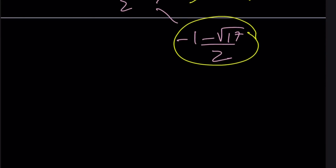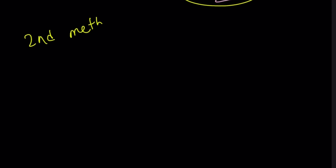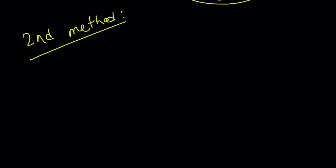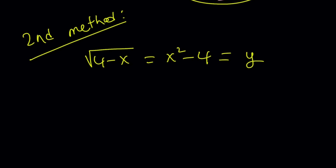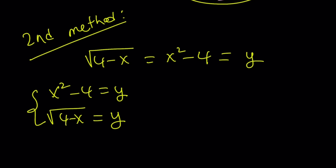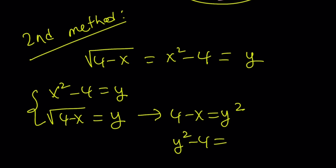Now let's look at the second method. I'm going to rewrite the original radical equation and set both sides equal to y, getting a system of equations. The first equation is x squared minus 4 equals y, and the second is the square root of (4 minus x) equals y. Squaring both sides of the second equation gives 4 minus x equals y squared, which can be rewritten as y squared minus 4 equals negative x.